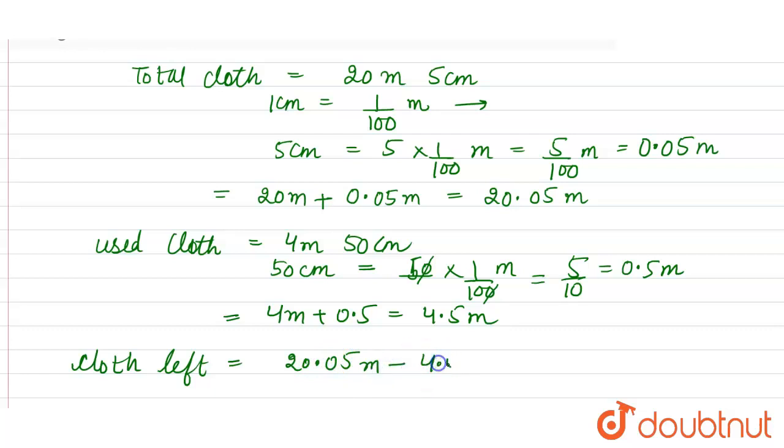So let's subtract 20.05 meter and 4.50 meter. So 5 minus 0 is 5, 10 minus 5 is 5, one we have carried, so 9 minus 4 is 5, and 2 minus 1, so 15.55 meter.